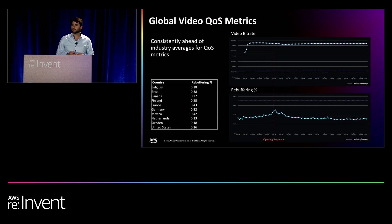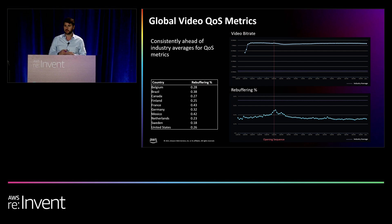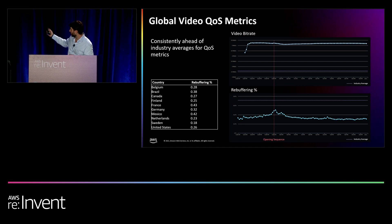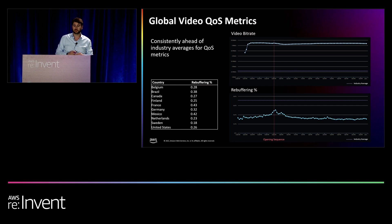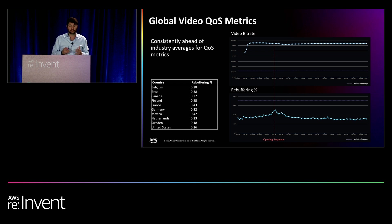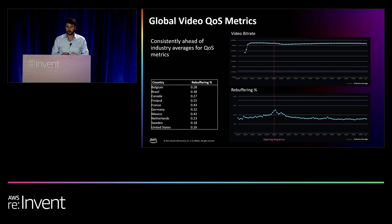With the help of our delivery partners and AWS's edge services, we have really smoothed out that spike. These charts show video bitrate and rebuffering percentages, with the opening sequence plotted in red. You can see that video bitrate remains well above industry averages, and rebuffering well below industry averages. There is a minor increase at the point of the opening sequence due to the sheer volume of new users starting video playback and requesting that first video segment — but still well below industry averages. This is CloudFront at work. CloudFront serves fans globally across 10 territories selected here, consistently delivering a very high-quality product.